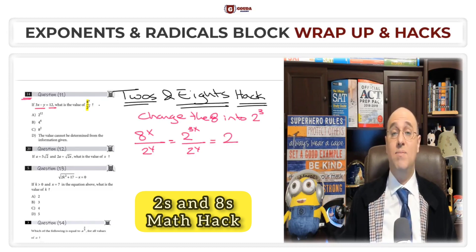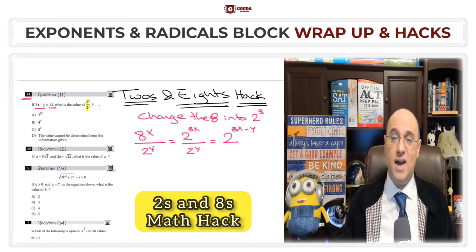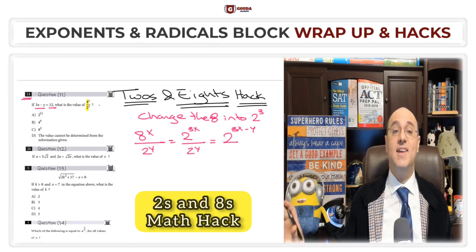We know right away that since we have the same base with division, we'll use subtraction for the powers, for the exponents. So two to the power 3x minus y. Initially, that's what we figured out.